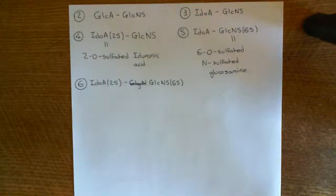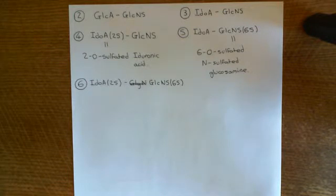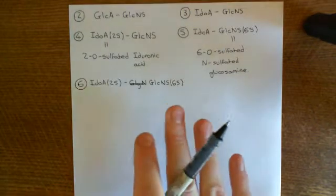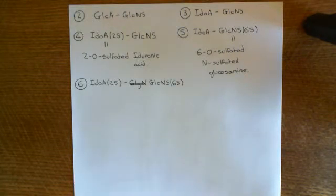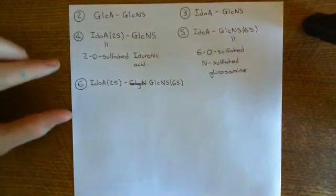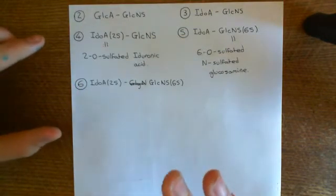Welcome to this next video in which we are talking about antithrombin-3 and heparin. We've now discussed what a glycosaminoglycan is — a polysaccharide made up by polymerizing disaccharides together — and we've discussed the structure of the six main disaccharides used to make a polysaccharide. You can make different glycosaminoglycans by using different fractions of each of these disaccharides within your polysaccharide.